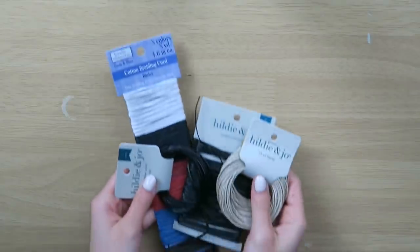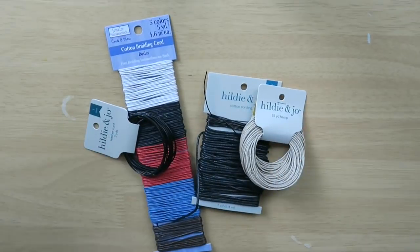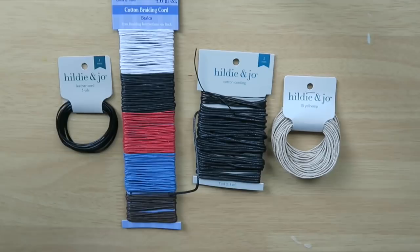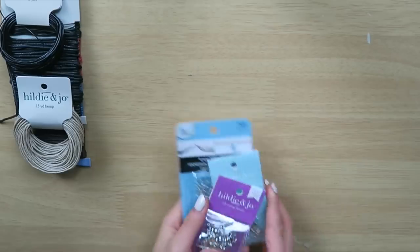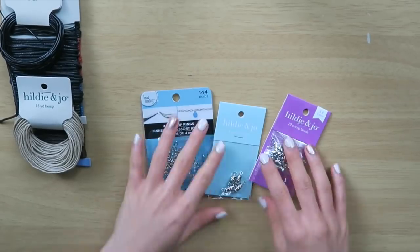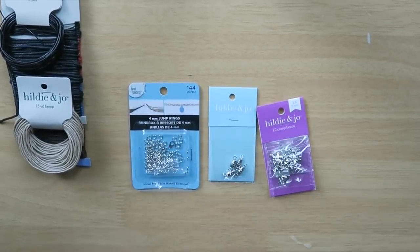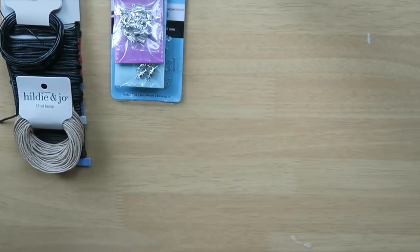To start off the supplies, the first thing that you're gonna need is some string of your choice. I have leather string and twine here, but it's all up to you. Next, you're just gonna need some metal jewelry making supplies. Here I have some clasps, jump rings and crimp beads.